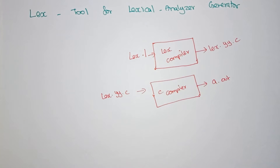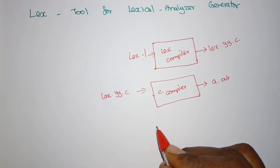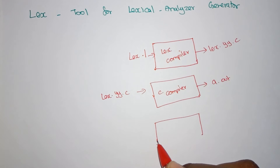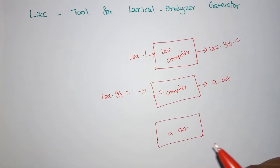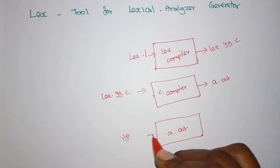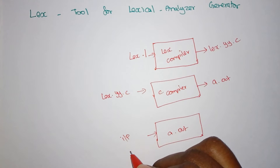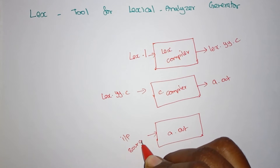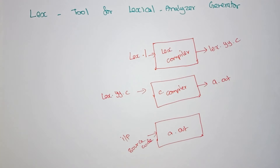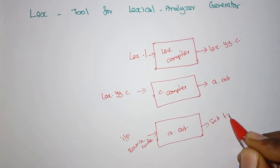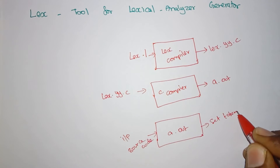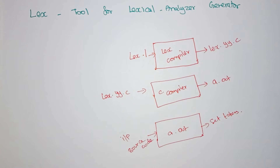This 'lex.yy.c' file is then fed into a normal C compiler for converting it to an object file. After compilation, the C compiler creates an object file. When you execute your object file — the 'a.out' — the input provided is your source program.